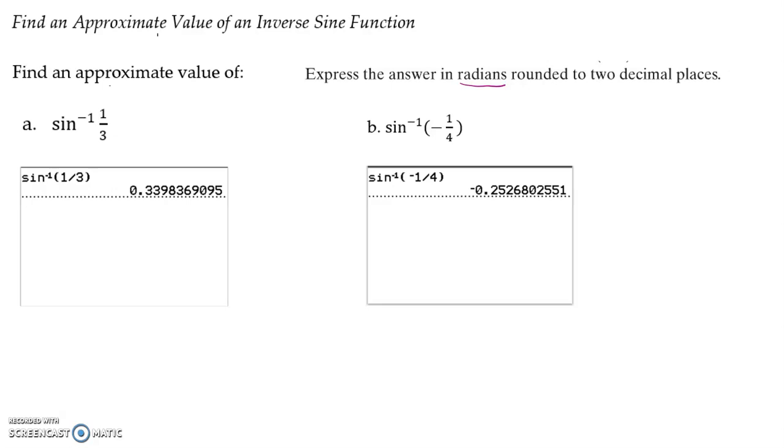Type in inverse sine of one-third, and you'll see that this comes out to 0.3398. Since we want to go to two decimal places, this is where we're cutting off our answer. Since the next digit is a nine, we can round up to 0.34 radians for part a.